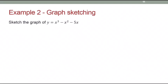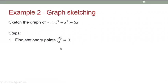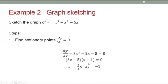Next: how to sketch a graph by applying differentiation. Given y = x³ − x² − 5x, sketch the graph. Step 1: find the stationary points where dy/dx = 0. Differentiating gives 3x² − 2x − 5 = 0. Factorizing this equation gives x = 5/3 and x = −1.